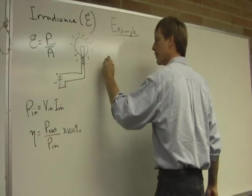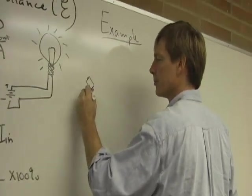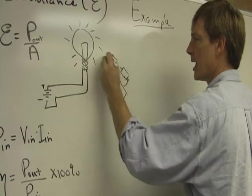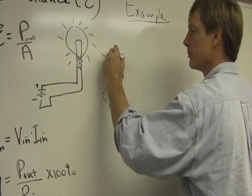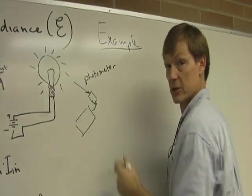Let's say we've got a photometer out here. And a photometer, well, it's what it is. Photo means light. Meter means to measure. It measures light.